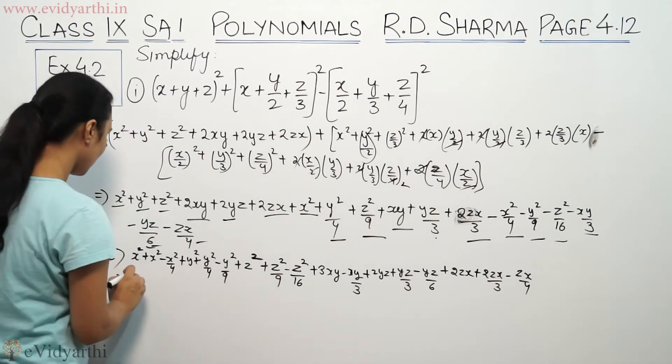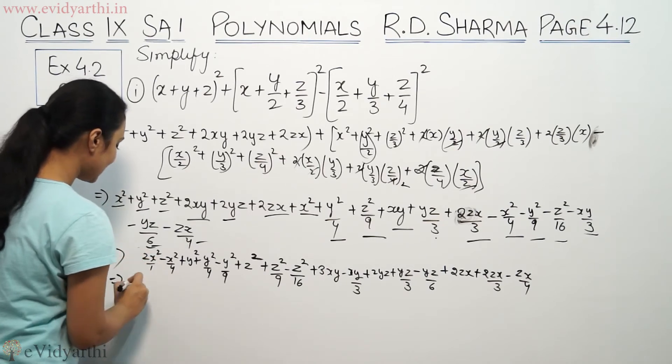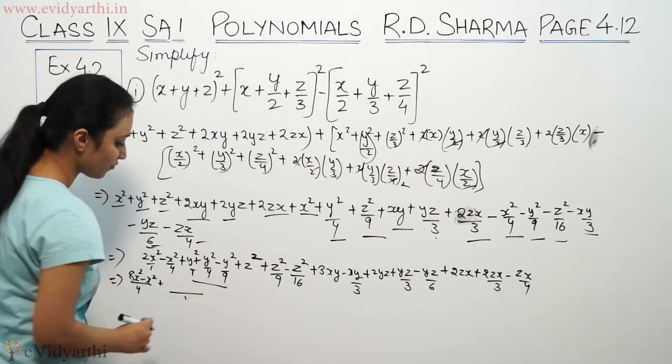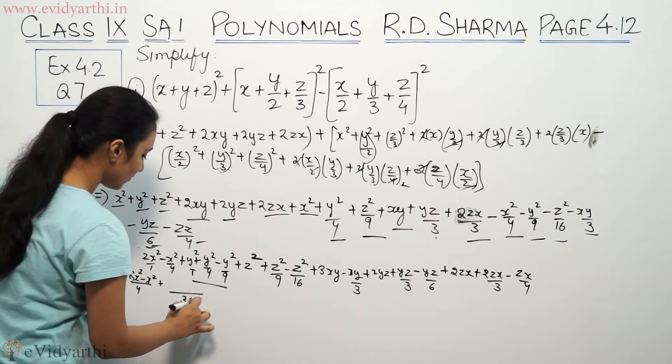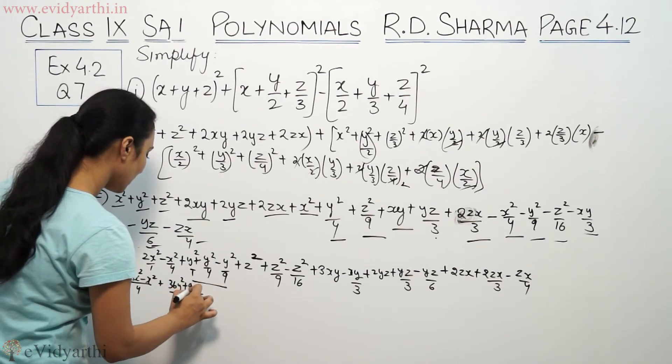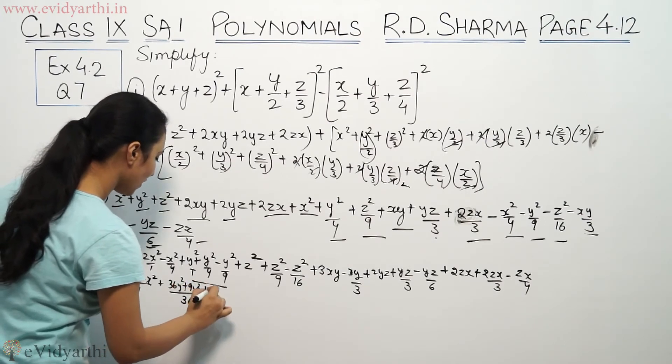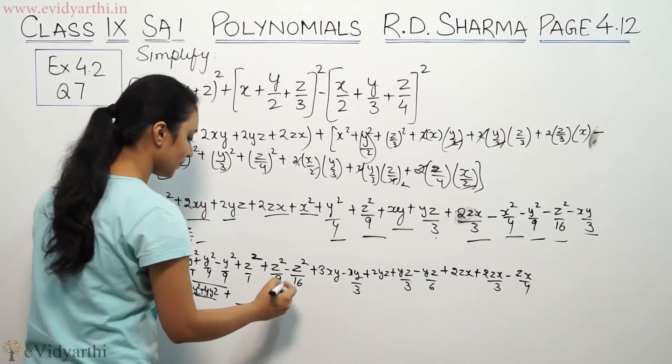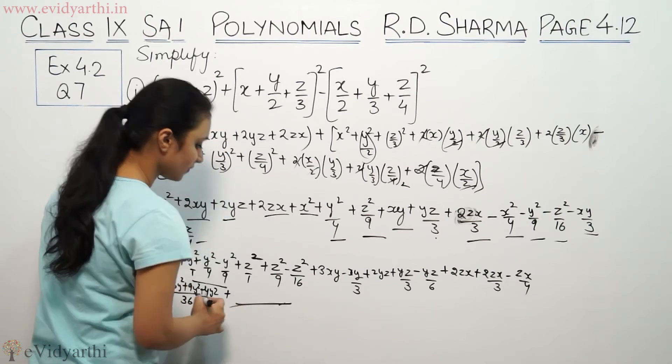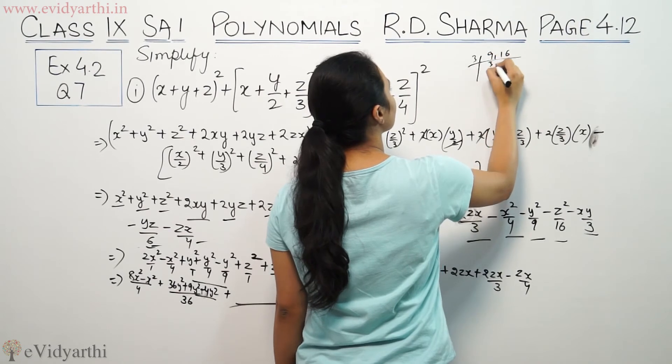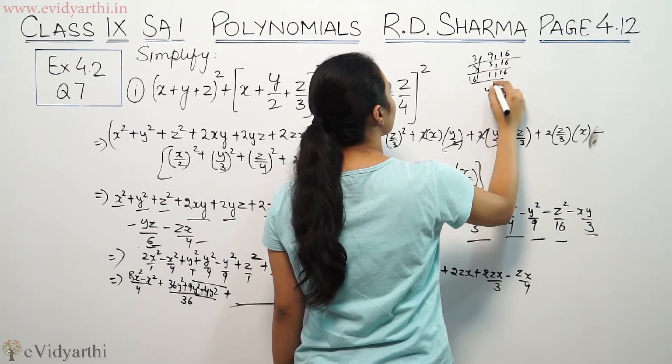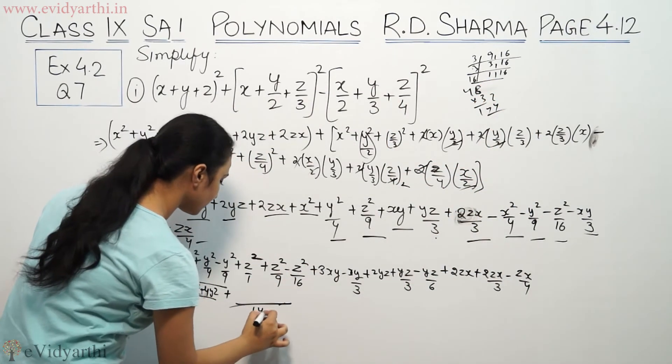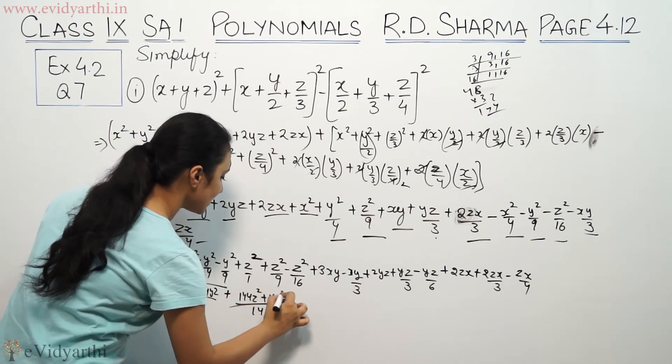x²+x² is 2x², so 2x²-x²/4=7x²/4. For y² terms, the LCM of 4 and 9 is 36, giving us (36y²+9y²-4y²)/36=41y²/36. For z² terms, LCM of 9 and 16 is 144.